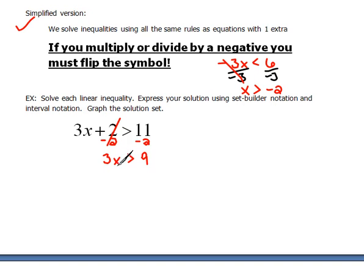Now I still need x alone, so I have to undo that multiplication. We need to divide both sides by 3, and now we have x on the left and 9 divided by 3 is 3 on the right. We did not multiply or divide by a negative, so the symbol stays the same.